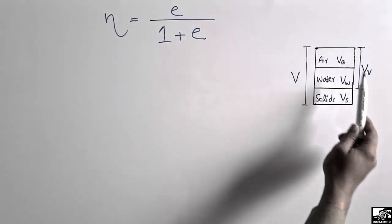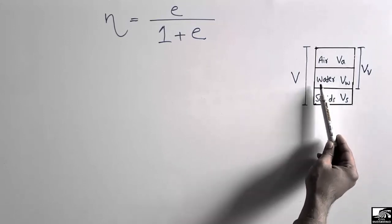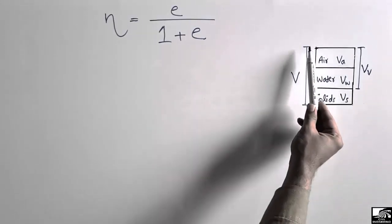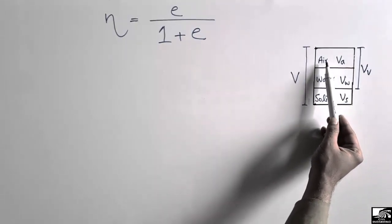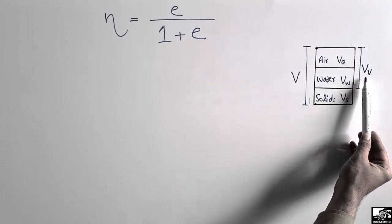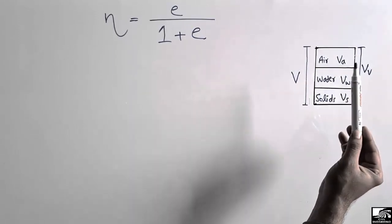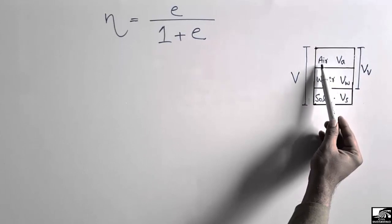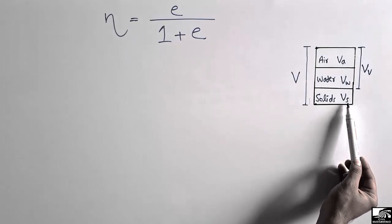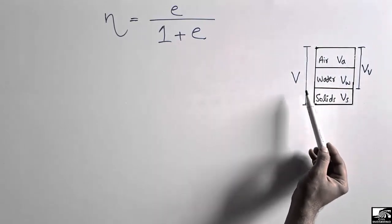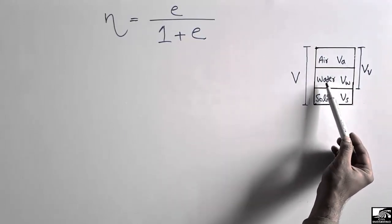To prove this relation, let's consider the soil phase diagram. This diagram consists of three main components: solids, water, and air. The total volume of the soil phase is represented by V. The volume of voids VV is the combination of the volume of air VA and the volume of water VW, while the volume of solids is VS.